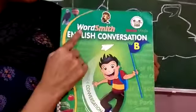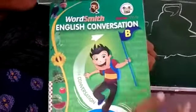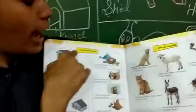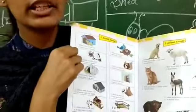Children, this is Wordsmith English conversation book. In this page number 4, you have the animal foods. You can refer this. Thank you children.